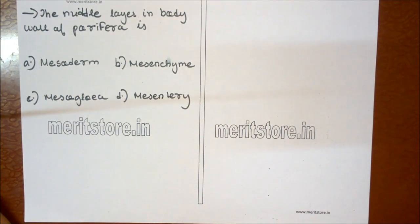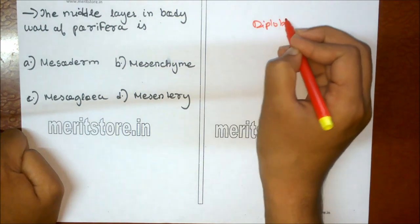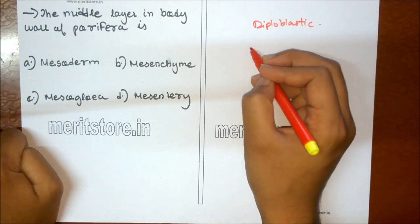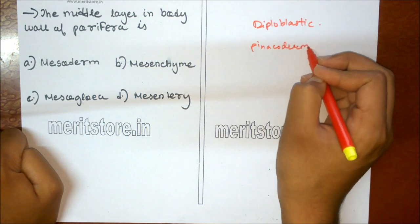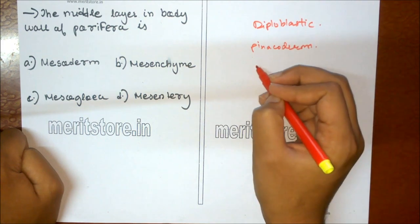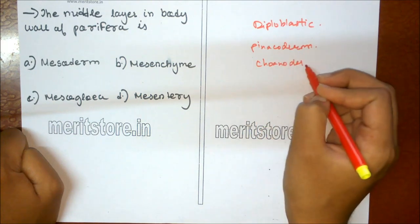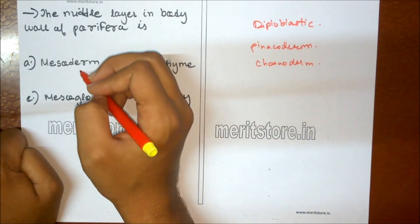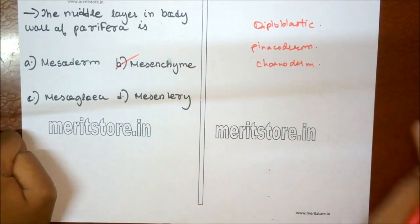The middle layer in the body wall of Porifera is: A mesoderm, B mesenchyme, C mesoglia, D mesentery. Sponges are diploblastic animals with two germ layers. The body wall has an outer pinacoderm or ectoderm, an inner choanoderm or endoderm, and a gelatinous non-cellular mesenchyme in between. So the middle layer in the body wall of Porifera is mesenchyme. Option B is the correct answer.